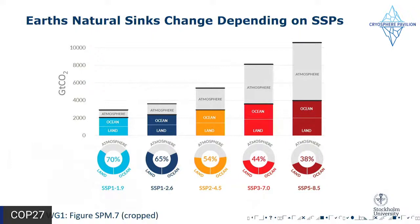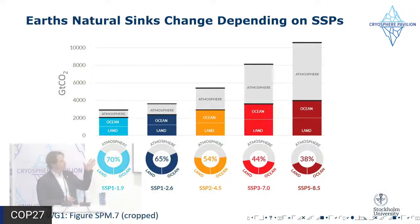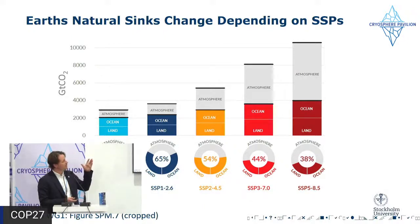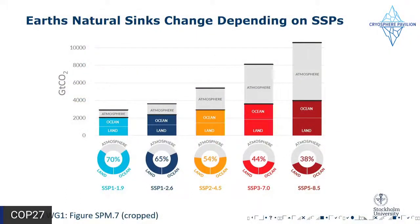To frame this discussion, it's important to think about the role of natural feedbacks and natural systems in the climate change context. Land and oceans together are taking up roughly half of the CO2 we emit — for every two molecules emitted they take up one — and they've been doing us this favor since the start of the pre-industrial era.